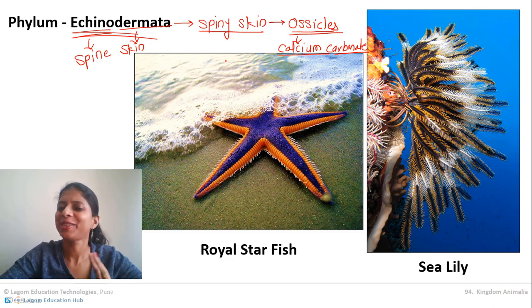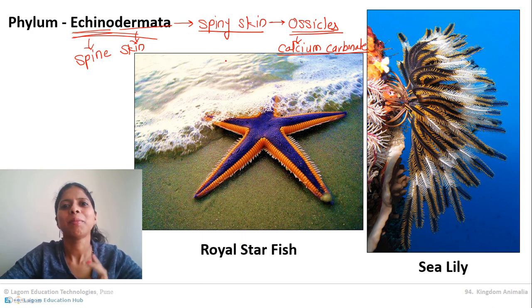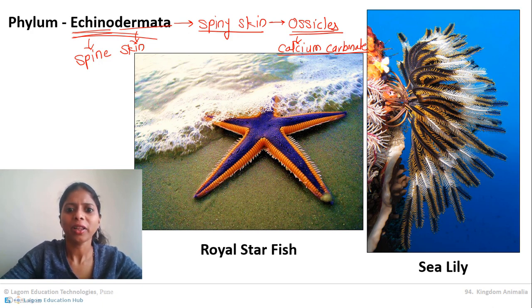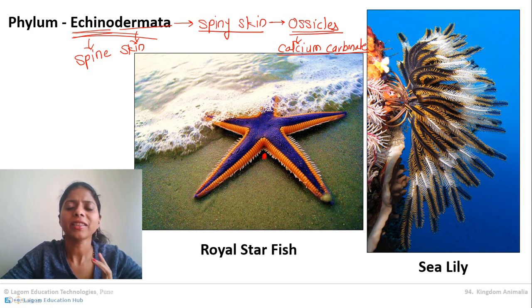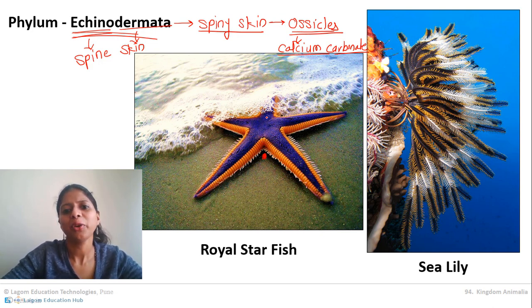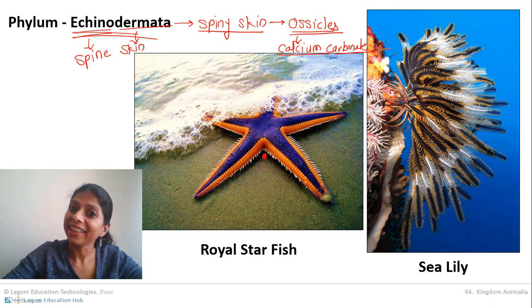On the lower, oral side the starfish has a mouth, and on the opposite dorsal side it has the anus — two different openings, confirming the tube-within-tube body plan. Next is symmetry: adults show radial symmetry, and in the case of starfish specifically, pentamerous symmetry with five arms.